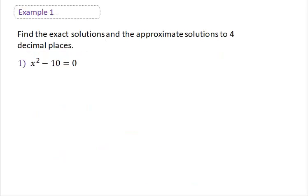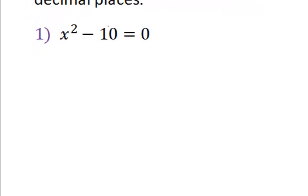Now I have a couple more examples. In these examples, we want to solve by first giving the exact solutions exactly as we have done, as well as giving the approximate solutions to four decimal places. In this problem, we can solve it using the square root method or the quadratic formula method. I'm going to use the square root method because it is a much shorter process. First, let me isolate my square by adding 10 to both sides of the equation, which gives me x squared equals positive 10.